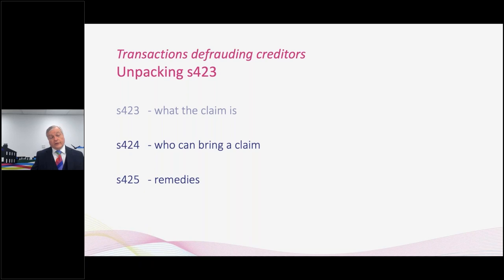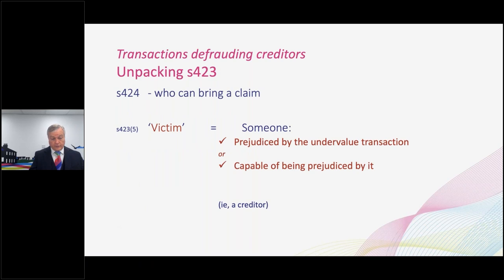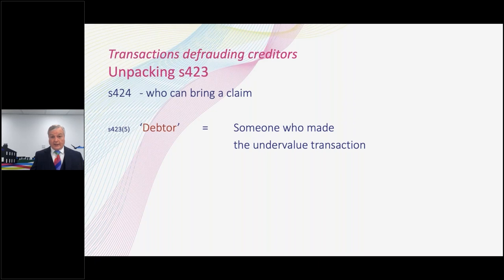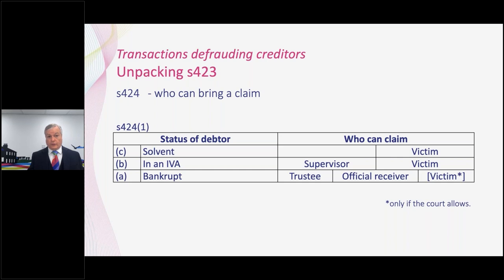So who can do something about the blag? Two definitions are relevant here. First, in Section 423, is the definition of a victim — somebody who is prejudiced by the transaction. The second is the definition of a debtor, also in Section 423 — basically the person who entered into the undervalue transaction, which in context is usually going to be the bankrupt or the insolvent company. Those definitions of victim and debtor are used in Section 424, which identifies those who can bring a claim under Section 423.